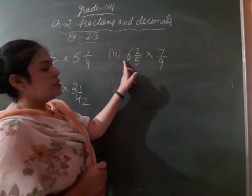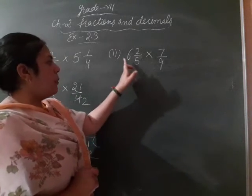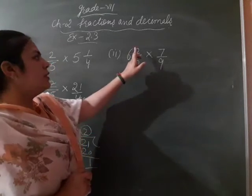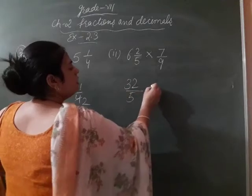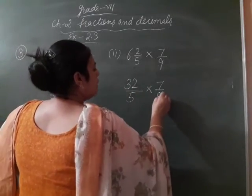Same next, first mixed fraction convert into the improper. 6, 5's are 30, 30 plus 2, 32 by 5 into 7 by 9.